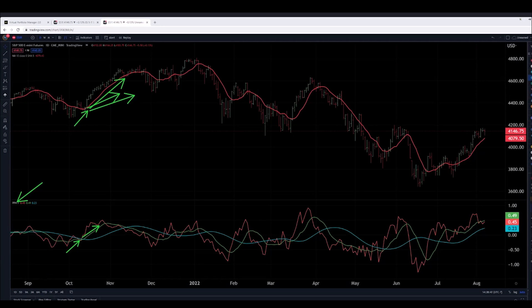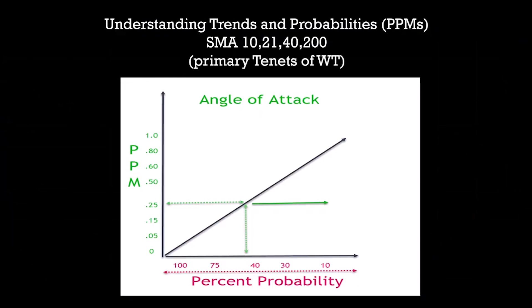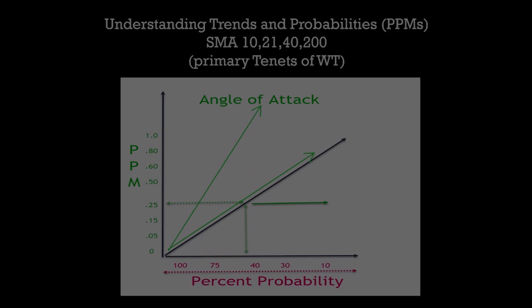Bob also talks about something called the angle of attack, which is an aviation term. In trading, it means that if the market is going up too quickly, it's likely to correct and come down. The steeper the angle of the moving average, the more likely the trend is to change. Using these indicators, Bob can tell when the market is likely to trend up or down and when it's likely to change direction, helping traders make better decisions on when to buy or sell.